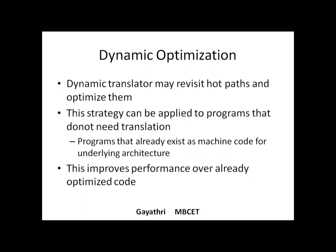For dynamic optimization, we use a dynamic translator. Like a binary translator, the dynamic translator revisits hot parts — the portions of code where most execution time is spent — and optimizes them. This strategy can be applied to programs that do not need translation, and the improvements from dynamic optimization improve performance over already-optimized code.